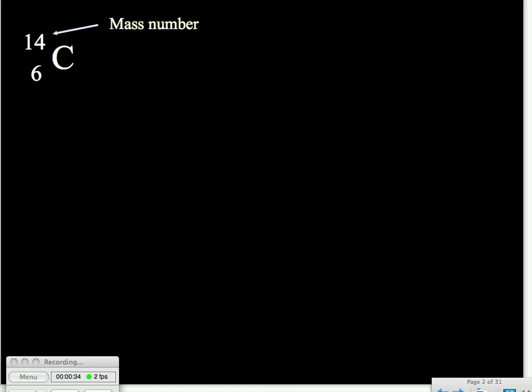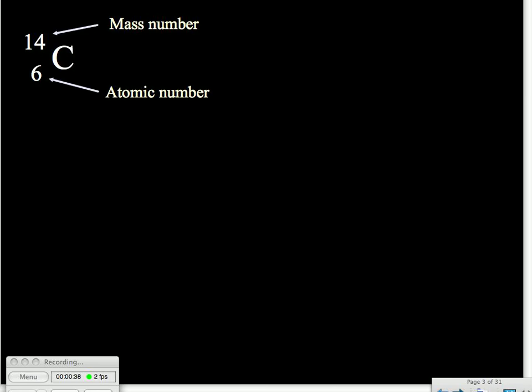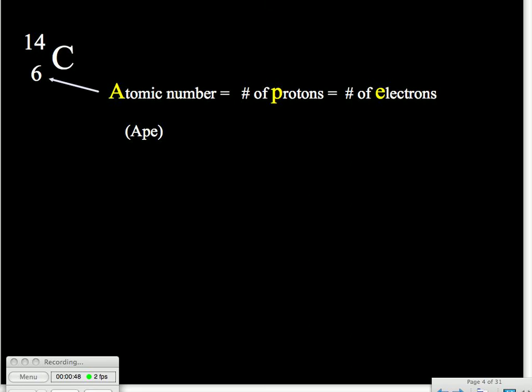The top number is our mass number, and the bottom number is our atomic number. Please recall that the atomic number — we say we go APE — because the atomic number tells us the number of protons, and if it's a neutral atom, it tells us the number of electrons. The top number, the mass number, is the total number of particles that contribute significant mass to an atom — in this case, just the protons and the neutrons.